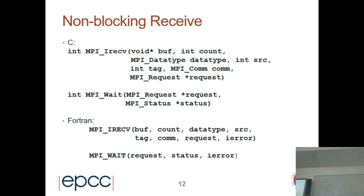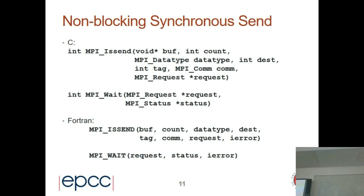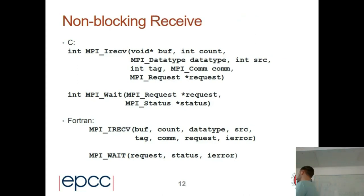You might notice something missing from the non-blocking receive call compared to the blocking one. The status is missing — because the receive isn't complete yet, there's no status available. The status is filled in when you wait on it. You also get status when you wait on a send. The request handle is totally opaque and meaningless to the user — MPI behind the scenes keeps track of what type of request it is; you don't need to know as a user of MPI.